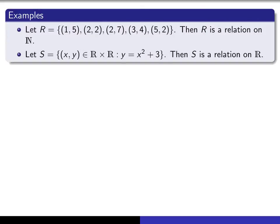Here we have an example of a relation which we call S. It's a set of ordered pairs in R cross R, and so it's a relation on R.